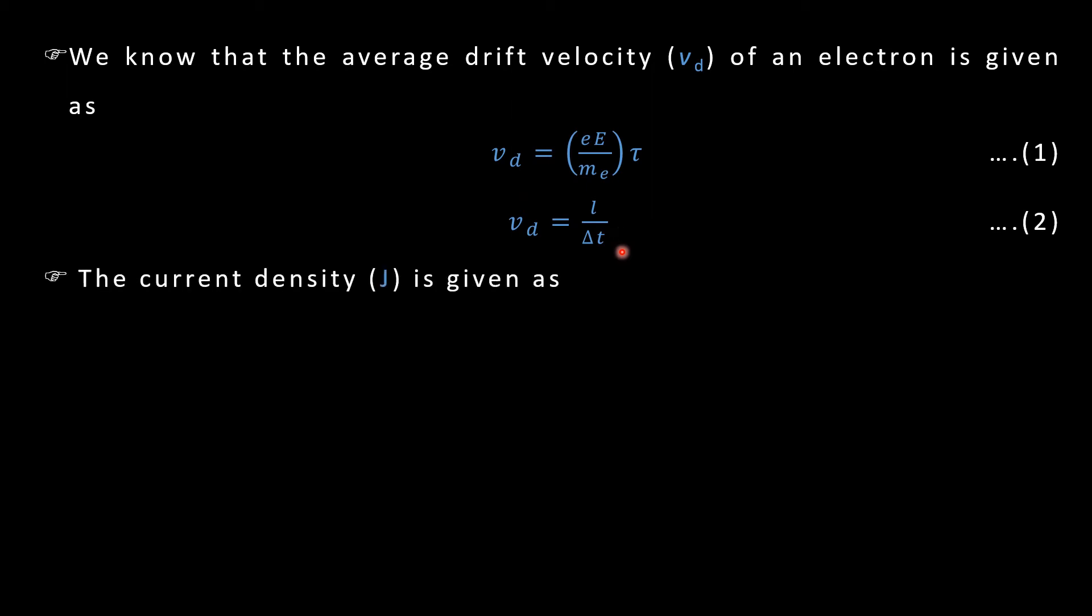Now current density J can be given as I by A or Ne upon A delta T. So what if I substitute delta T from this? What is delta T here? Can I say delta T is L by Vd? So in equation 3 if you take L by Vd instead of delta T, Vd will go up in numerator and then what will we have?